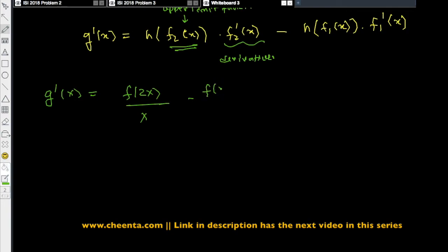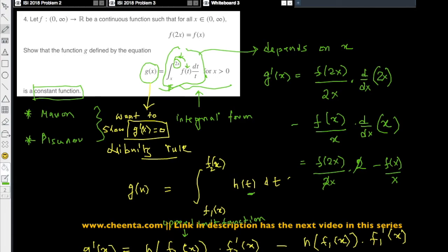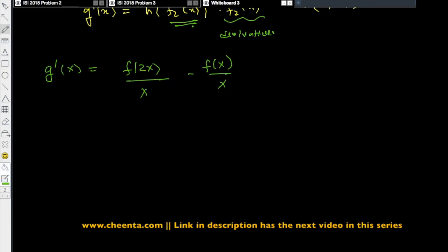Now our problem says that f of 2x is equal to f of x. So just replace f of 2x by f of x and you have f of x by x minus f of x by x equal to 0.